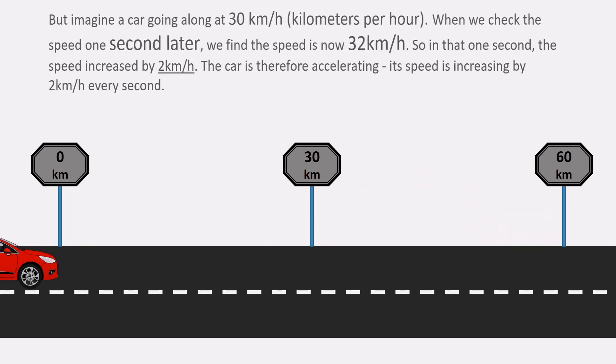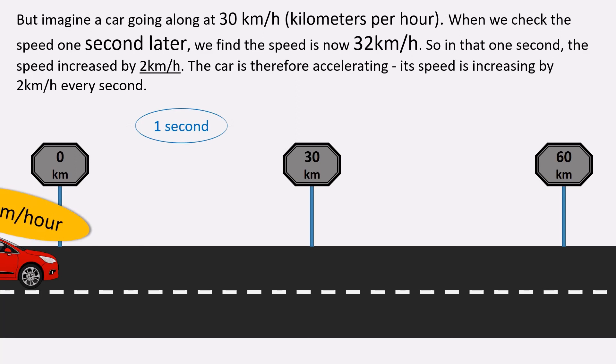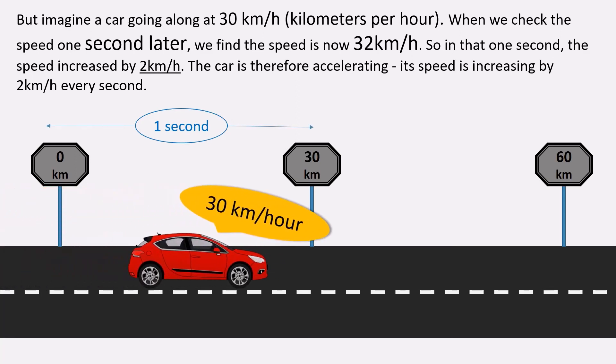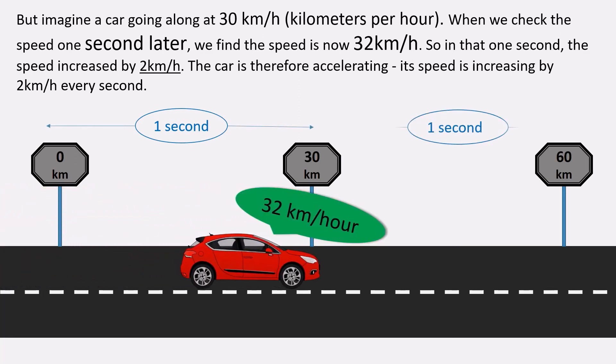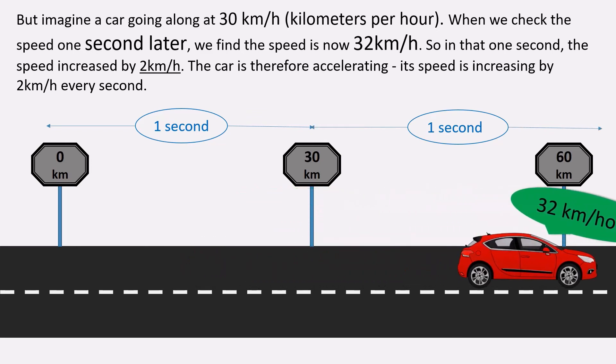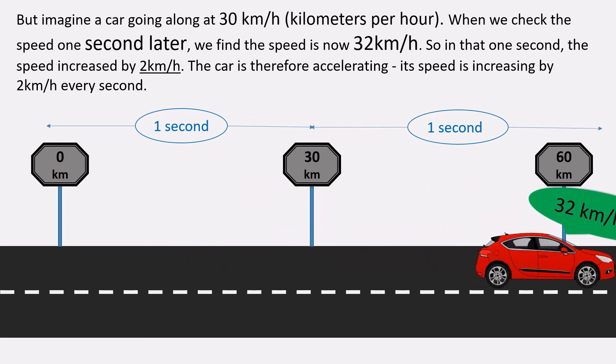But imagine a car going along at 30 km per hour. When we check the speed one second later, we find the speed is now 32 km per hour. So, in that one second, the speed increased by 2 km per hour. The car is therefore accelerating. Its speed is increasing by 2 km per hour every second.